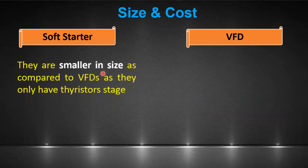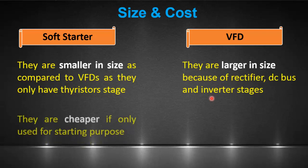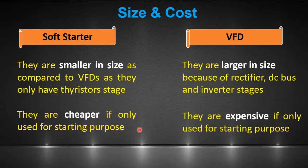The size of soft starters is considerably smaller compared to VFDs because they have only a thyristor stage, whereas VFDs are larger in size because of the rectifier, DC bus, and inverter stages. Because of this simpler hardware, soft starters are cheaper in cost. If a VFD is used only for starting purposes, then it is the more costly option.